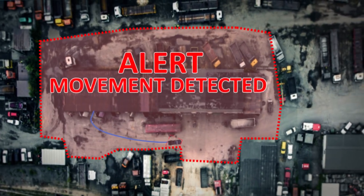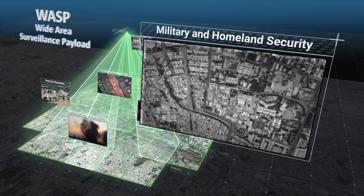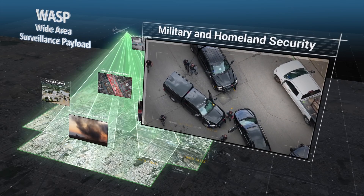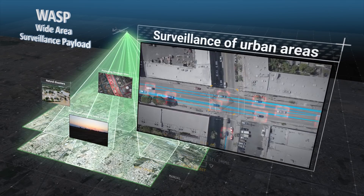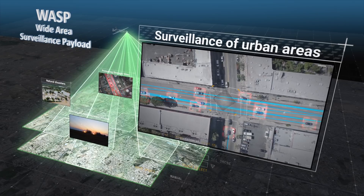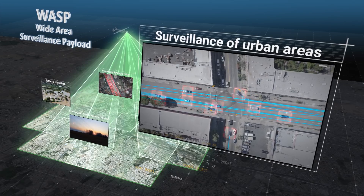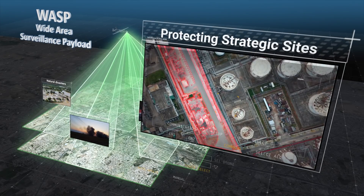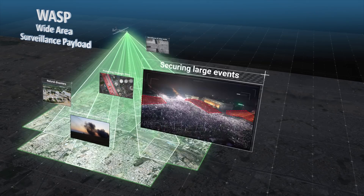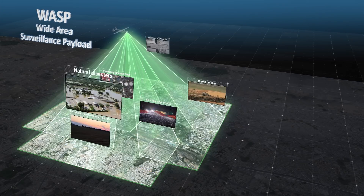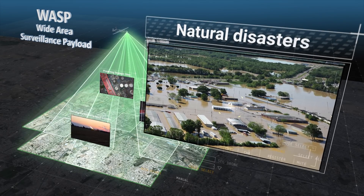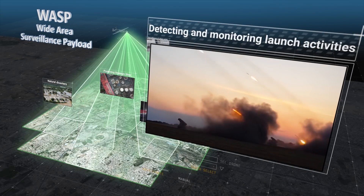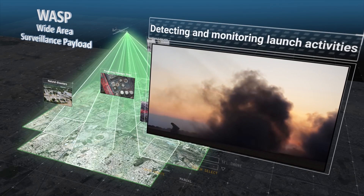The WASP system has many uses for both military and homeland security: surveillance of urban areas for police or military usage, border defense, protection of strategic sites, securing large events, control and coverage of natural disasters, and detecting and monitoring launch activities before and after the launch.